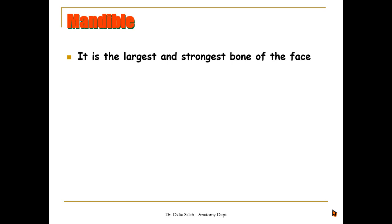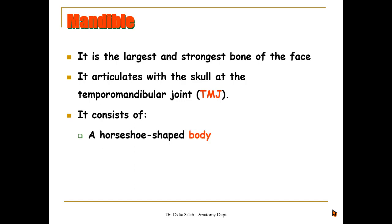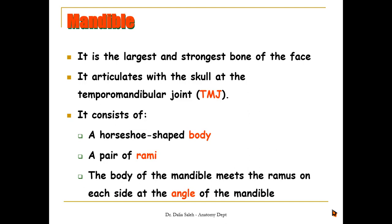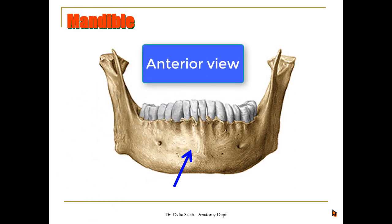The mandible is the largest and strongest bone of the face. It articulates with the skull at the temporomandibular joint, and it is the only movable joint of the skull. It consists of a horseshoe-shaped body and a pair of rami. The body of the mandible meets the ramus on each side at an angle, which we call simply the angle of the mandible.